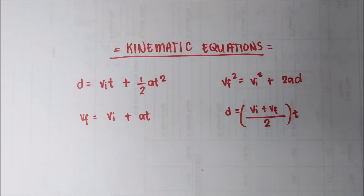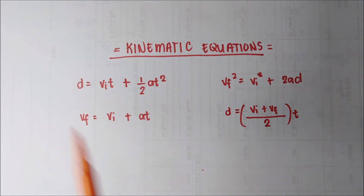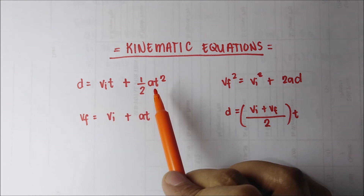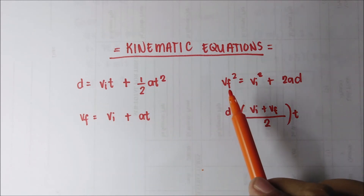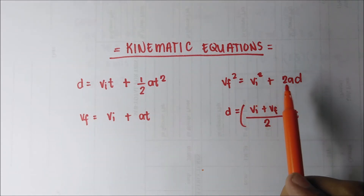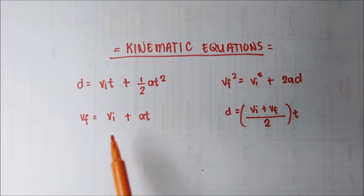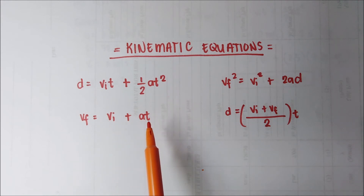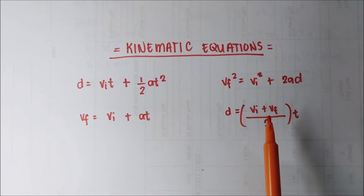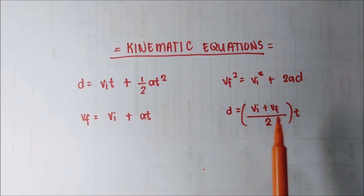Next we have the kinematic equations, which can be used in different problems depending on what is given. First: distance equals initial velocity multiplied by time plus one-half of acceleration multiplied by time squared. Second: final velocity squared equals initial velocity squared plus twice the acceleration and distance. Third: final velocity equals initial velocity plus acceleration multiplied by time. Fourth: distance equals the quantity initial velocity plus final velocity divided by 2, multiplied by time.